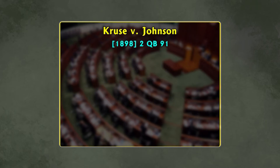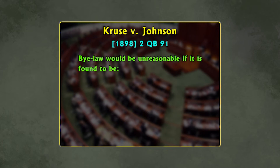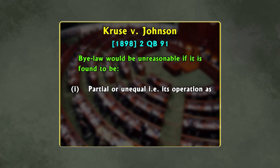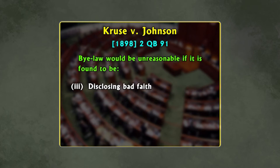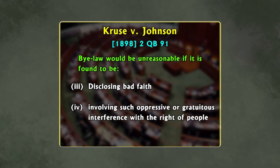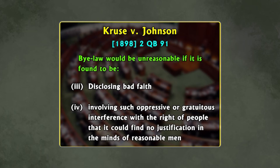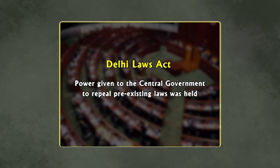In Kruse v. Johnson, it was laid down that a bylaw would be unreasonable if it is found to be: number one, partial or unequal in its operation as between different classes; number two, manifestly unjust; number three, disclosing bad faith; and number four, involving such oppressive or gratuitous interference with the rights of the people that it could find no justification in the minds of reasonable men. In the Delhi Laws Act case, the power given to the central government to repeal pre-existing laws was held to be ultra vires.